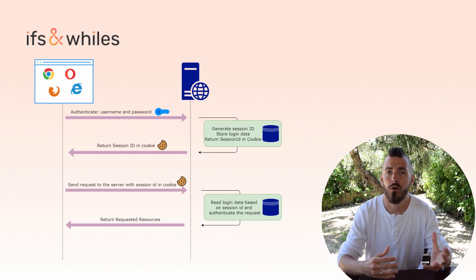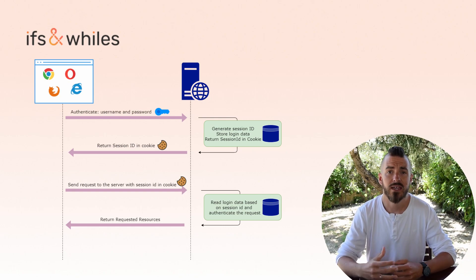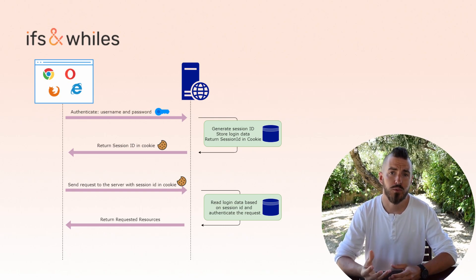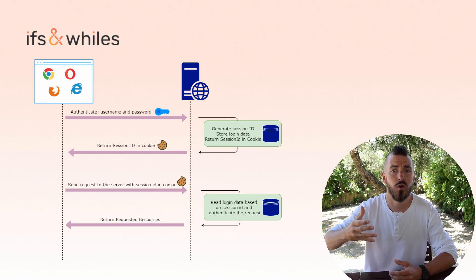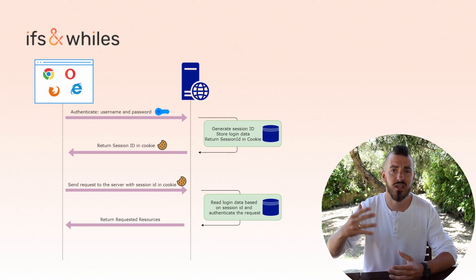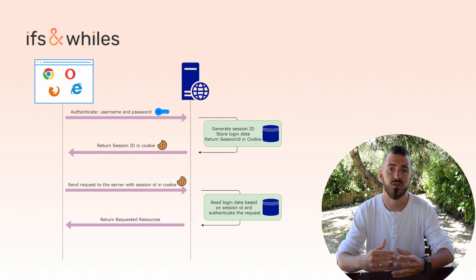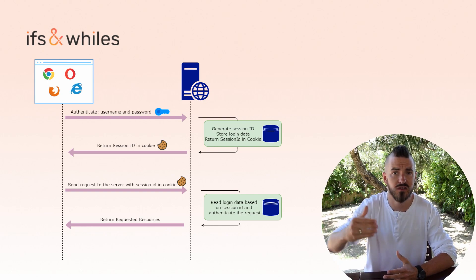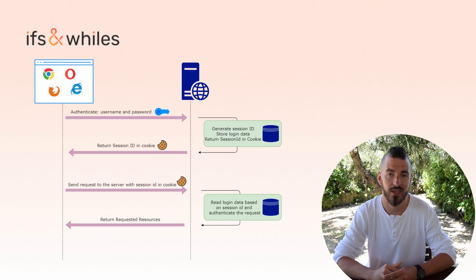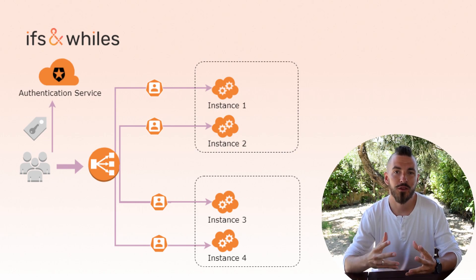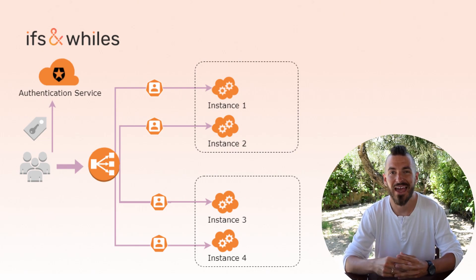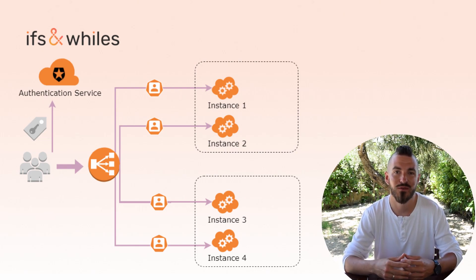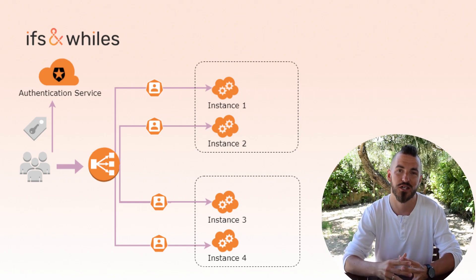User session can be stored in memory or in a centralized place. In the case of memory, there's one problem because all subsequent requests must go exactly to the same server, to the same application. In the case of a centralized place, all services that want to retrieve user data need to call an additional service, an additional store, in order to collect login data. This approach can be limiting for modern and complex architectures where we have many services working on different machines, and getting state from a central place can be troublesome for every operation.